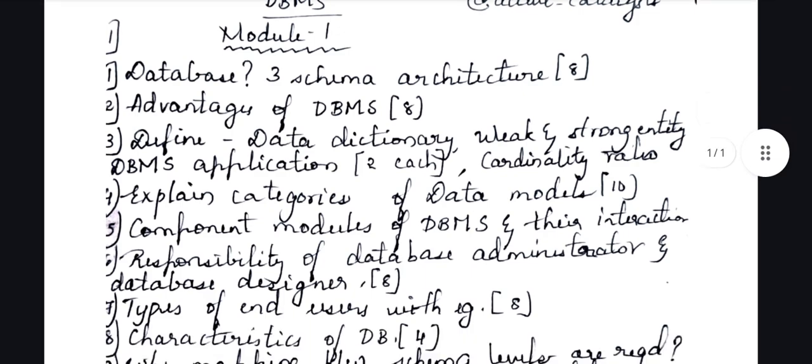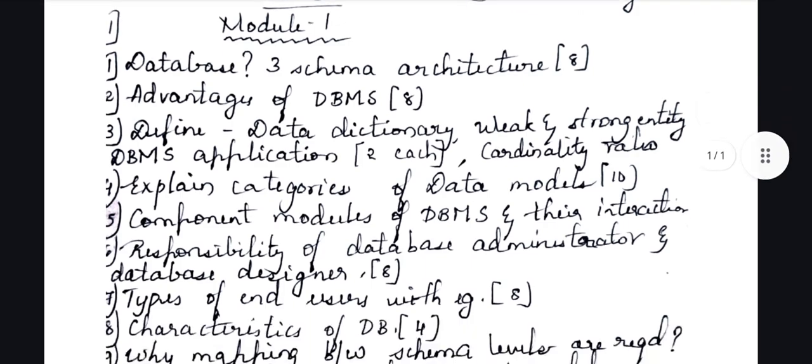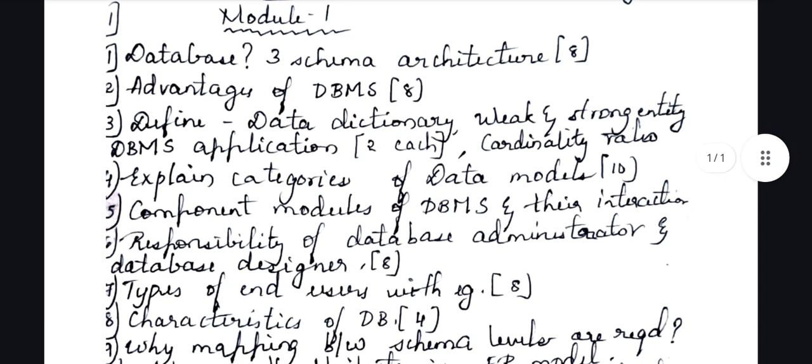Next comes: explain categories of data models. For each category, you should explain it along with one example. Only then can you get the complete 10 marks.